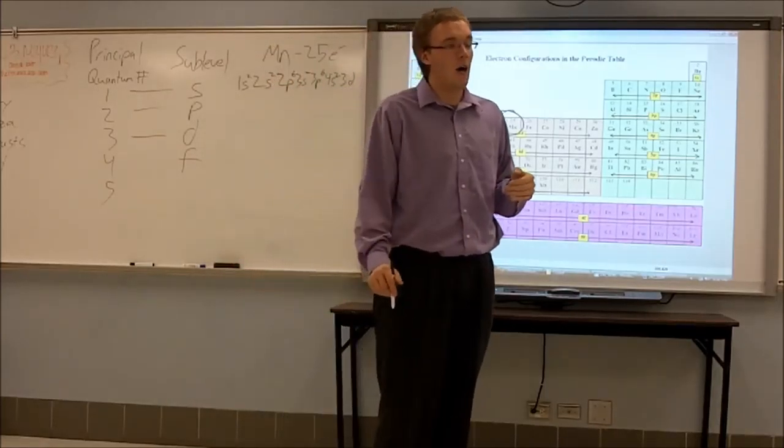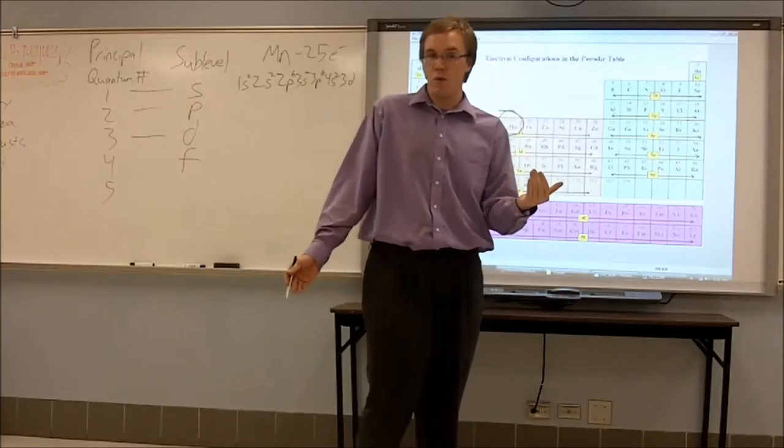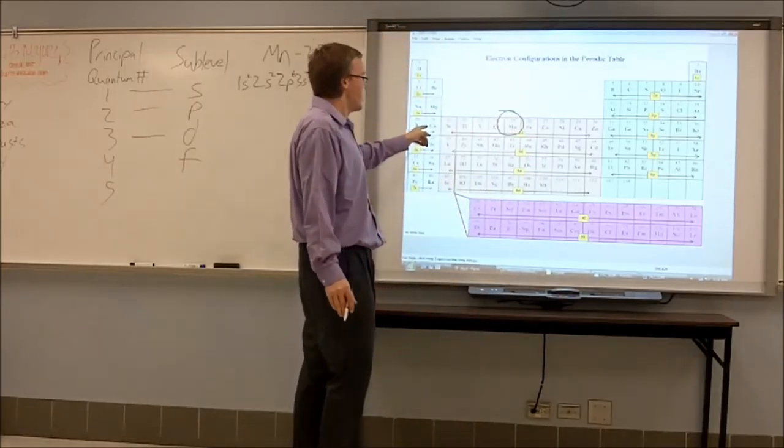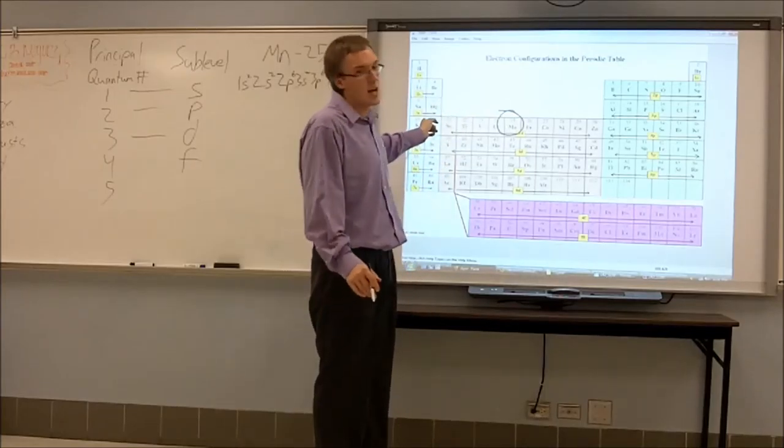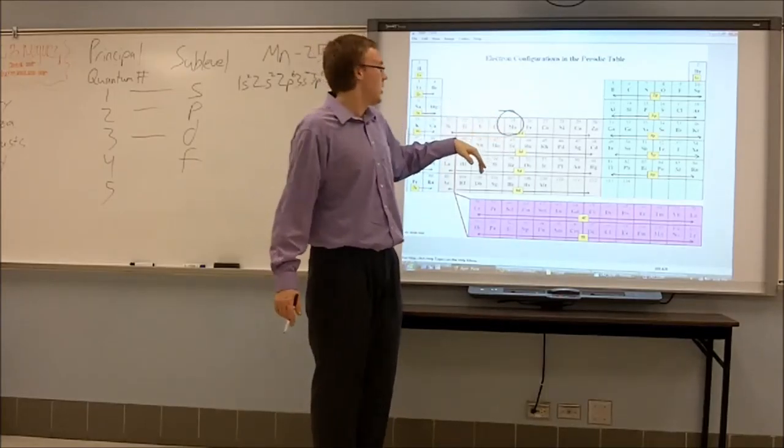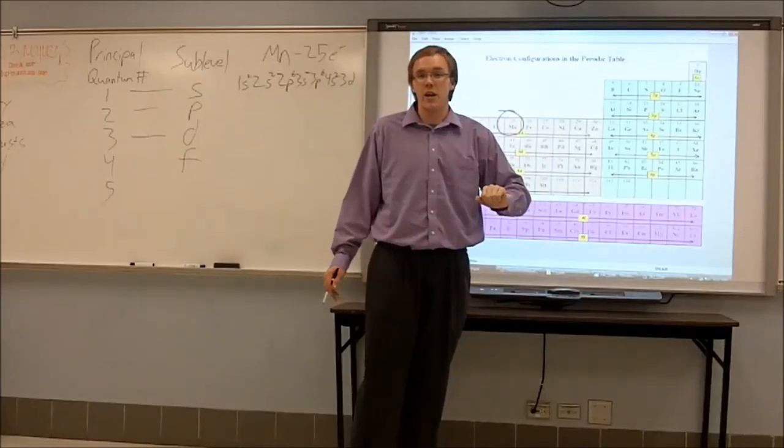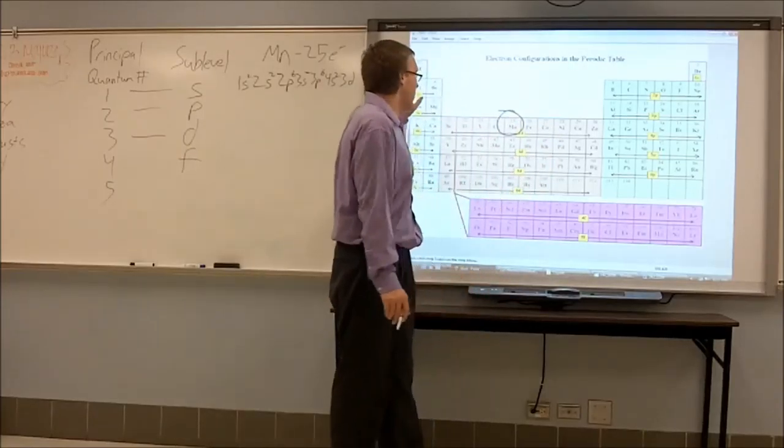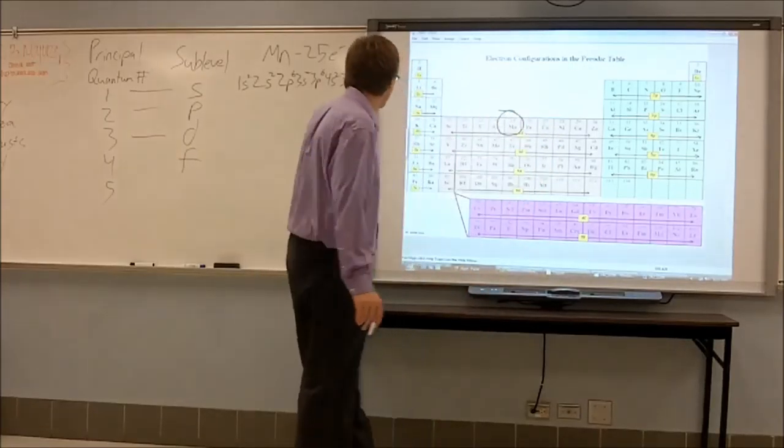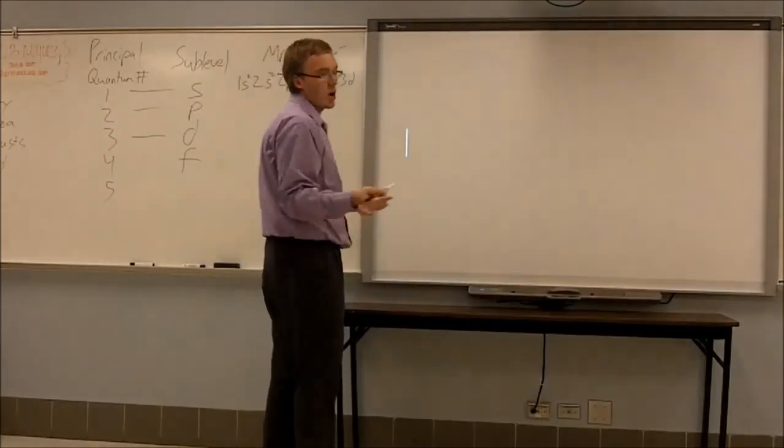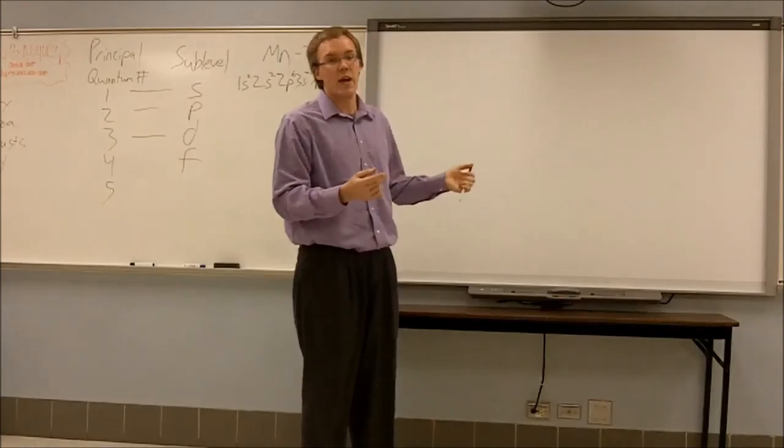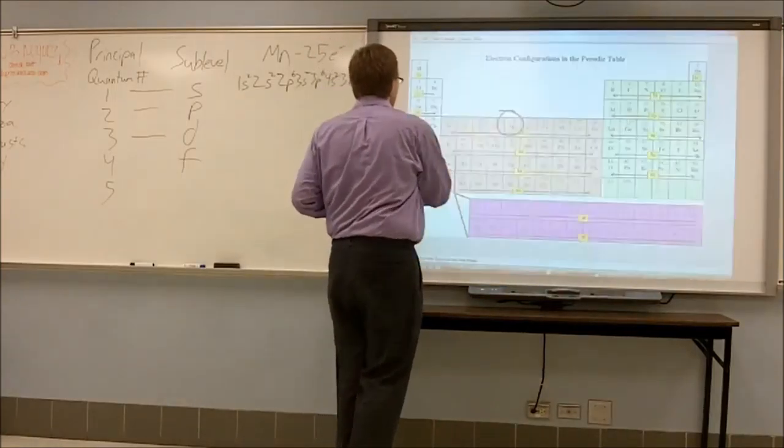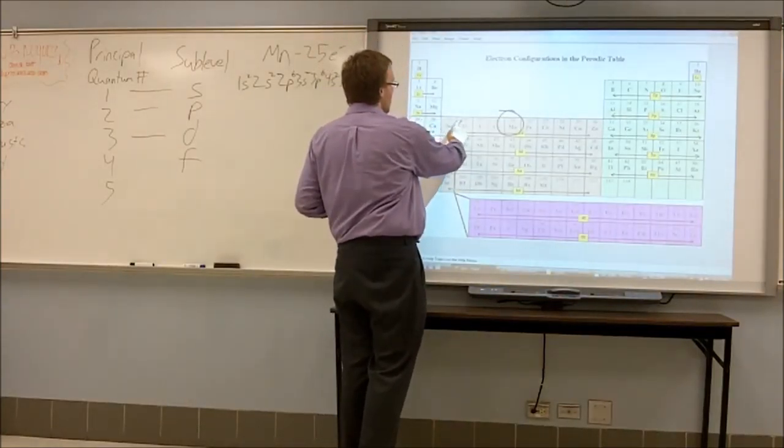And the reason why the D levels aren't moved up to here, so that it makes more sense, is take some complex physics knowledge. But for our purposes, we can explain it by thinking that electrons actually prefer to fill the four S sub group before they get into the three D. Okay? So that's why we write four S before we write three D.